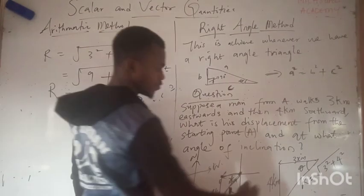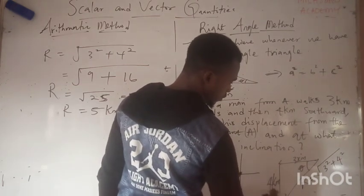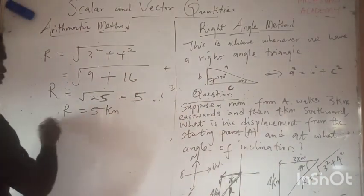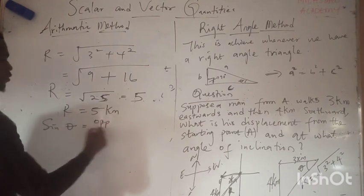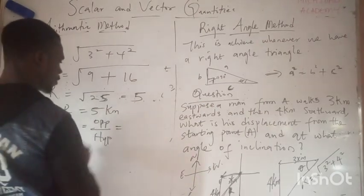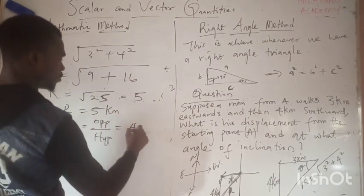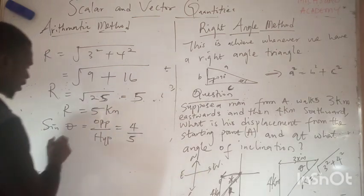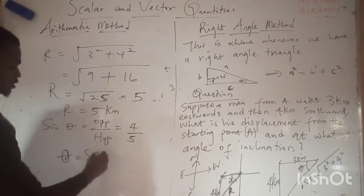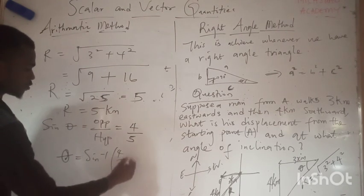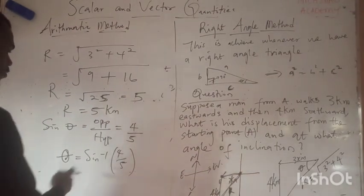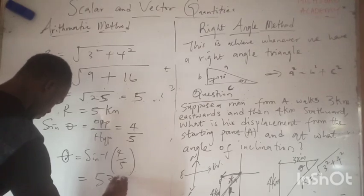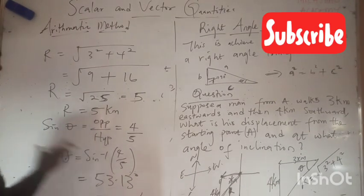For the angle, the opposite side is 4 kilometers and the hypotenuse is 5 kilometers. Using sine: sin(θ) = opposite over hypotenuse = 4/5. Therefore, θ equals sine inverse of 4/5, which gives 53.13 degrees. That is the angle of inclination for the right angle method.